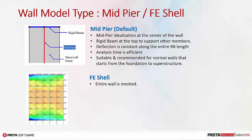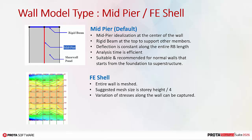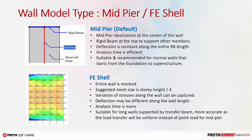In the FE shell model, the entire wall is meshed. As a general guideline, the maximum mesh size should be story height divided by 4. In this model, the variation of stresses along the wall can be evaluated. The deflection may be different along the wall length, depending on the loadings. The analysis is obviously more intensive since there are now numerous shells per wall in the analytical model. Particularly, the FE shell model should be used for long discontinuous walls supported by a transfer beam. The load transfer will be more accurate since FE shells will exert a uniform loading instead of a point load for mid-peer assumption. For merged shear walls, which are several walls that are combined, FE shell will be mandatory by default.